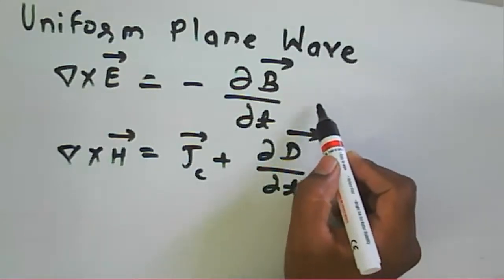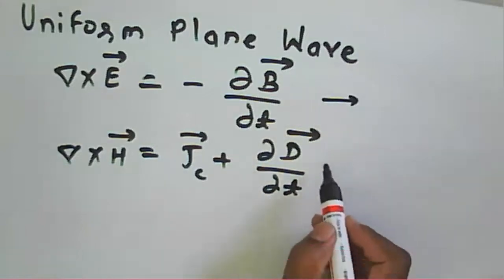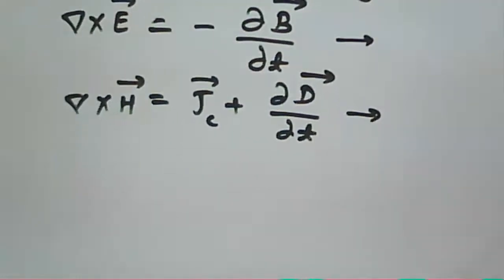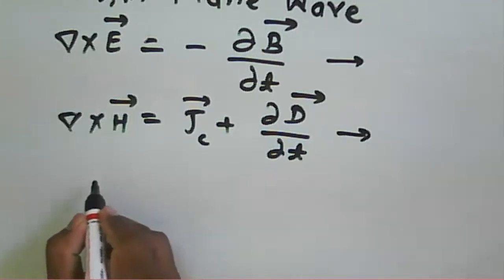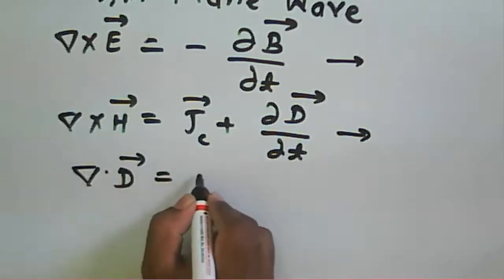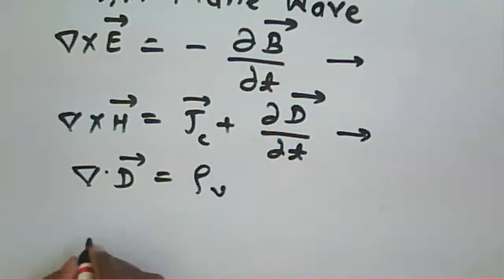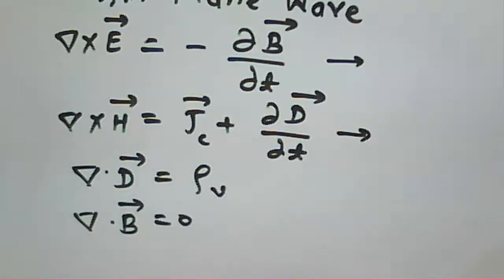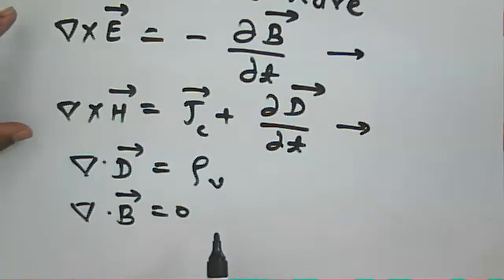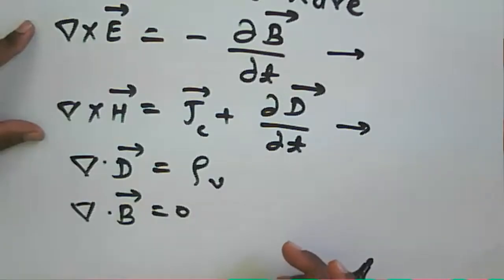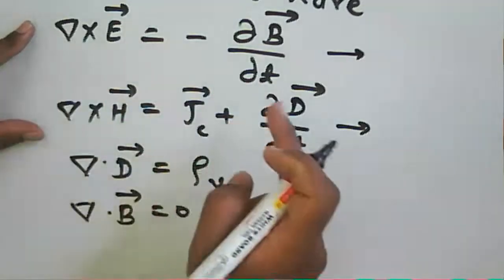Del cross E is nothing but Faraday's law, and del cross H is nothing but Ampere's circuit law. These are Maxwell's equations. Two more Maxwell's equations: del dot D bar is equal to rho, and del dot B bar is equal to zero. These are the four Maxwell's equations. We can write these equations in phasor form, where the ∂/∂t term is reduced to jω.